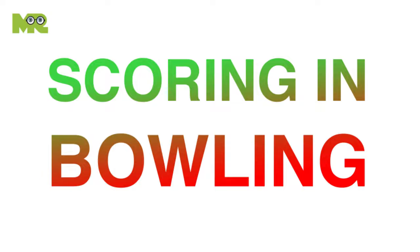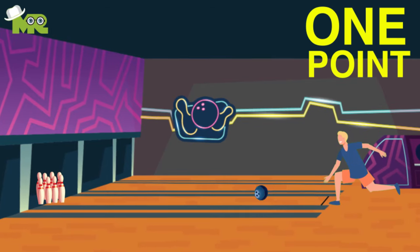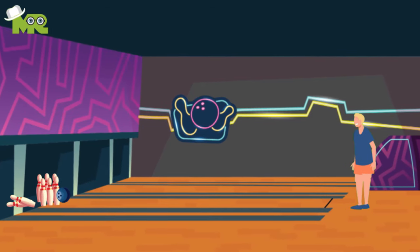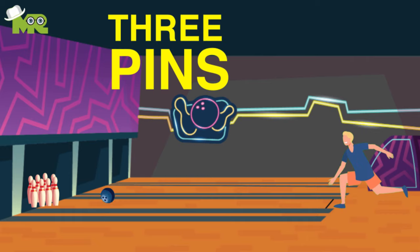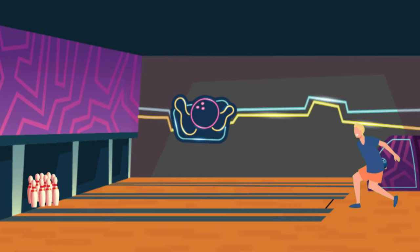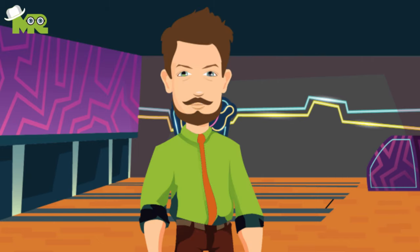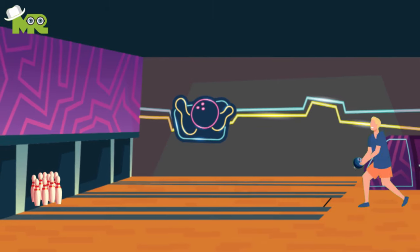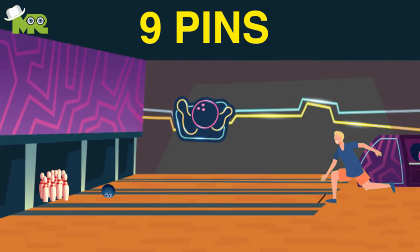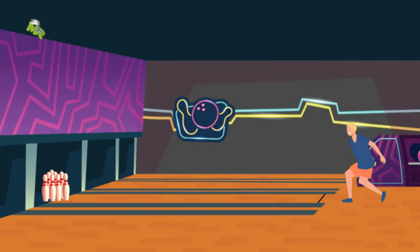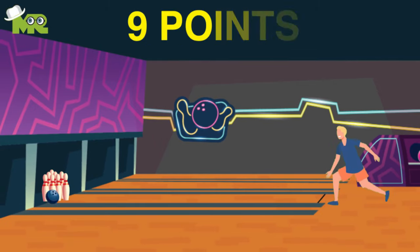Scoring in Bowling. In bowling, one point is scored for each pin that is knocked over. If a player bowls over three pins with the first shot, then six with the second, the player would receive a total of nine points for that frame. In case a player knocks down nine pins with the first shot but misses with the second, the player will still score nine points.